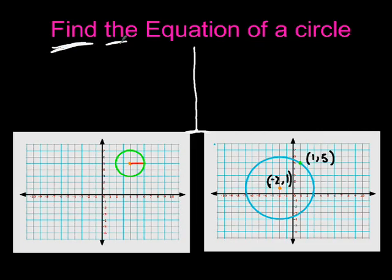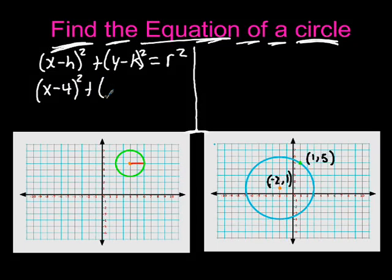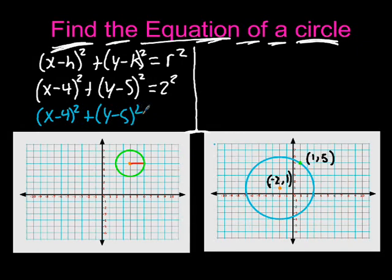Now this time we're going to keep on finding the equations of a circle or these two circles. We know that we are not in the origin for here, so I'm going to use the equation x minus h squared plus y minus k squared equals r squared. Well, let's just fill in the things. We have 4 and we have 5, so I'm going to have x minus 4 for k and plus y minus 5 squared equals I have a radius of 2 squared, and my final answer will be x minus 4 squared plus y minus 5 squared equals 4.